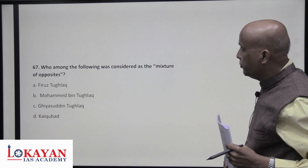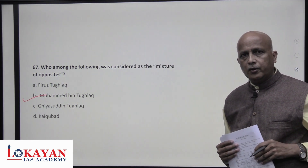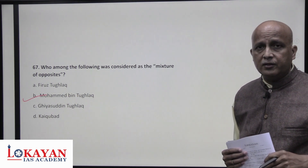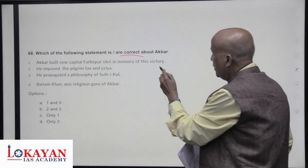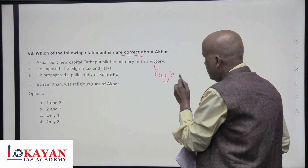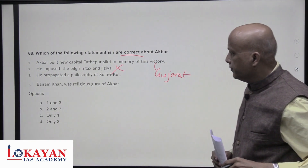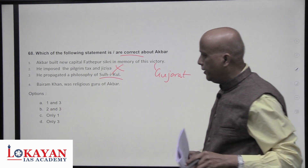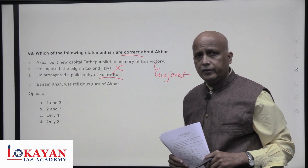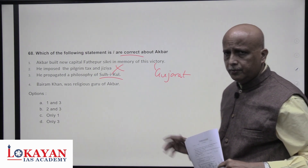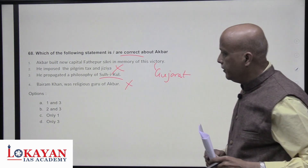Muhammad bin Tughluq is considered the 'mixture of opposites' — one of the greatest rulers of India but also behind the fall of the Sultanate. Regarding Akbar: he built Fatehpur Sikri in memory of his victory of Gujarat — true. He cancelled pilgrimage tax and Jizya — opposite of imposing them. He had the philosophy of Sulh-i-Kul — true. Bairam Khan was his political guardian, but religiously he had many gurus, including Shaikh Salim Chishti as a major one — so the statement about Bairam Khan being his religious guru is not true. Statements one and three are correct — answer is A.